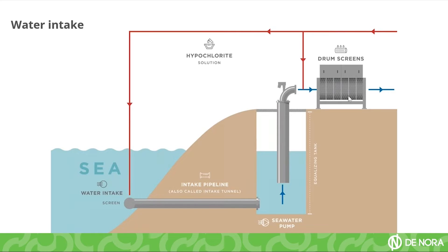Taking a look at a few diagrams representing different installations and how to dose hypochlorite, using the cycloid as an example. If you have a seawater intake capturing water directly from the sea, you normally have a screening process that draws the water through a water intake pipeline, also called a tunnel. You probably have an equalizing tank, and then you pump the water to screen or filter it, leading to your systems.